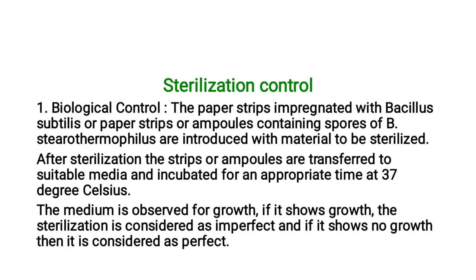Sterilization controls used for the autoclave: First, biological control — paper strips impregnated with Bacillus subtilis, or ampoules containing spores of Bacillus stearothermophilus, are introduced with the materials to be sterilized. After sterilization, the strips or ampoules are transferred to suitable media and incubated at 37°C. If growth is observed, sterilization is considered imperfect; if no growth, it is considered perfect sterilization.